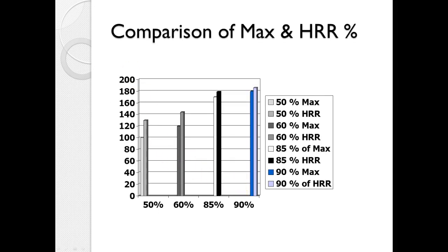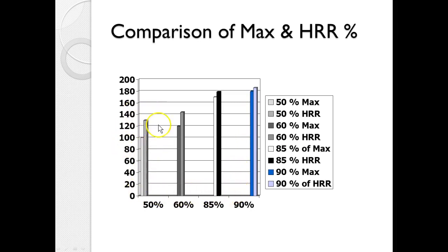Here's a comparison of the simple formula — percentage of max — and the Karvonen formula — percentage of heart rate reserve — to show you this is not apples and apples. Notice that there's not much difference at the high end of the training range. But at the low end, it becomes much more important to get that resting pulse so we can use the Karvonen and give them a more accurate training heart rate range.